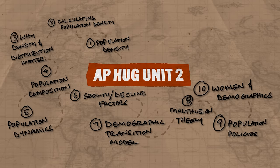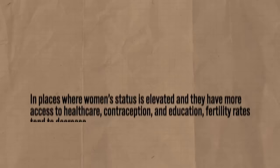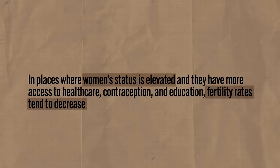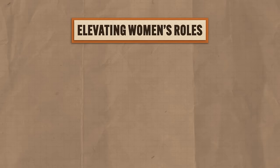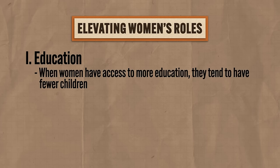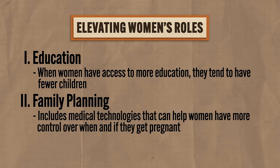Over the last few decades, geographers have focused more on women and their role with respect to fertility rates. As women's status is elevated — with more access to healthcare, contraception, and education — fertility rates tend to decrease. There are three key ways women's roles can be elevated. First, access to education: when women have more education, they tend to have fewer children — demographers call this the 'More Books, Less Babies Principle.' Second, access to family planning: medical technologies like the birth control pill help women control when and if they get pregnant, lowering fertility rates. Third, increased access to employment: as more opportunities opened for women in the workplace, many delay marriage and childbearing to focus on careers.